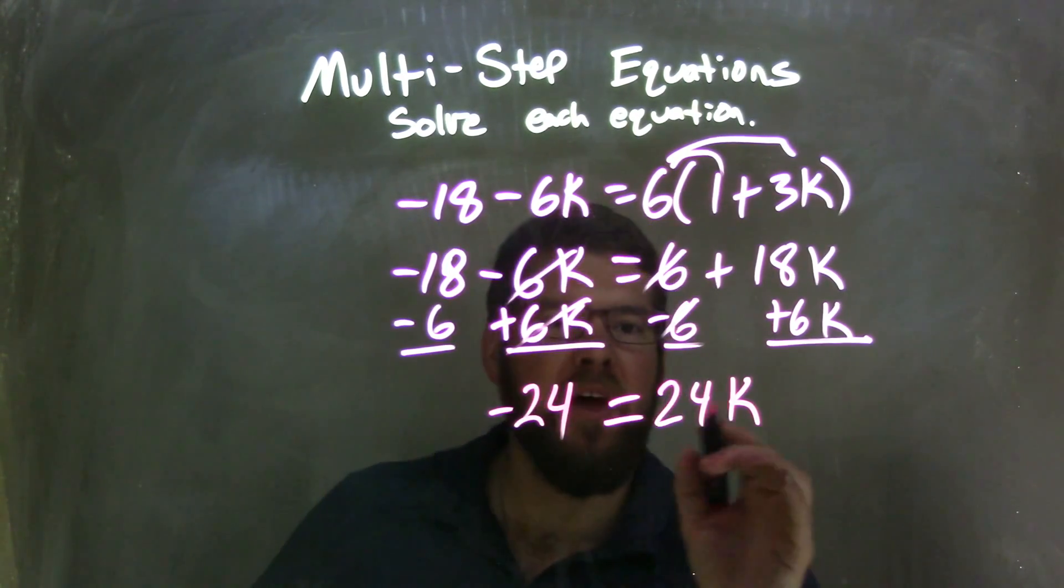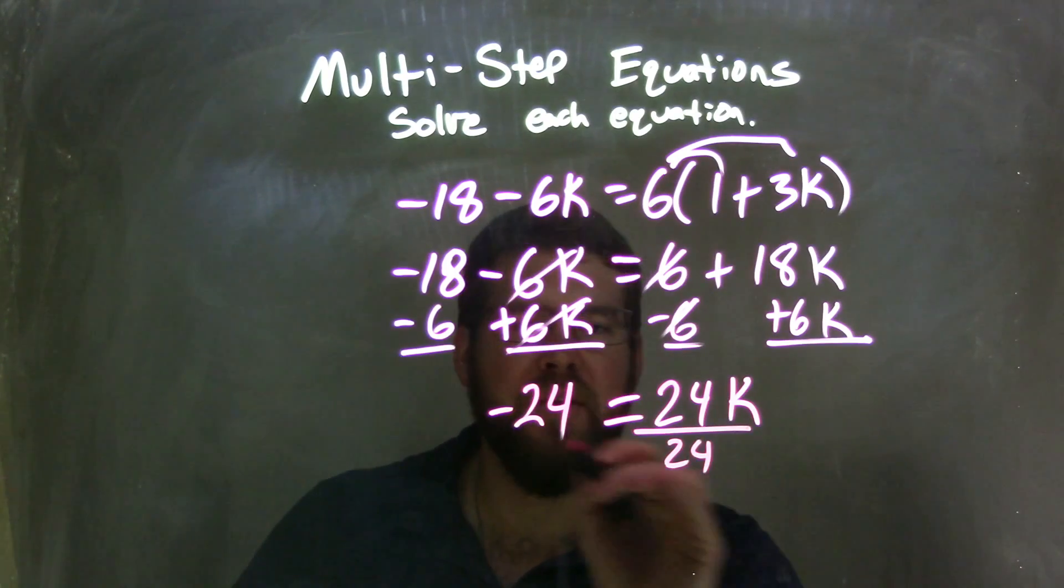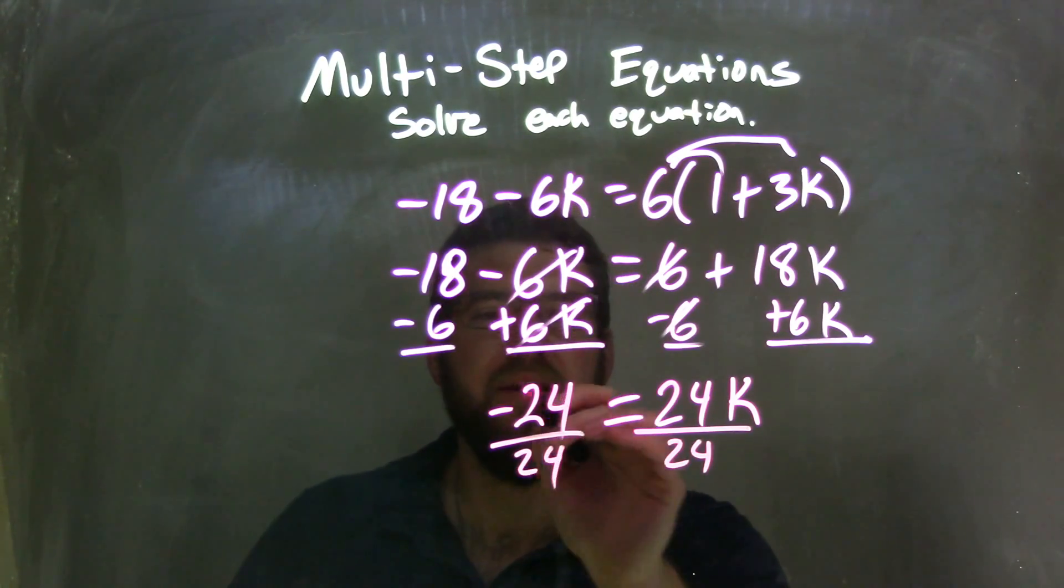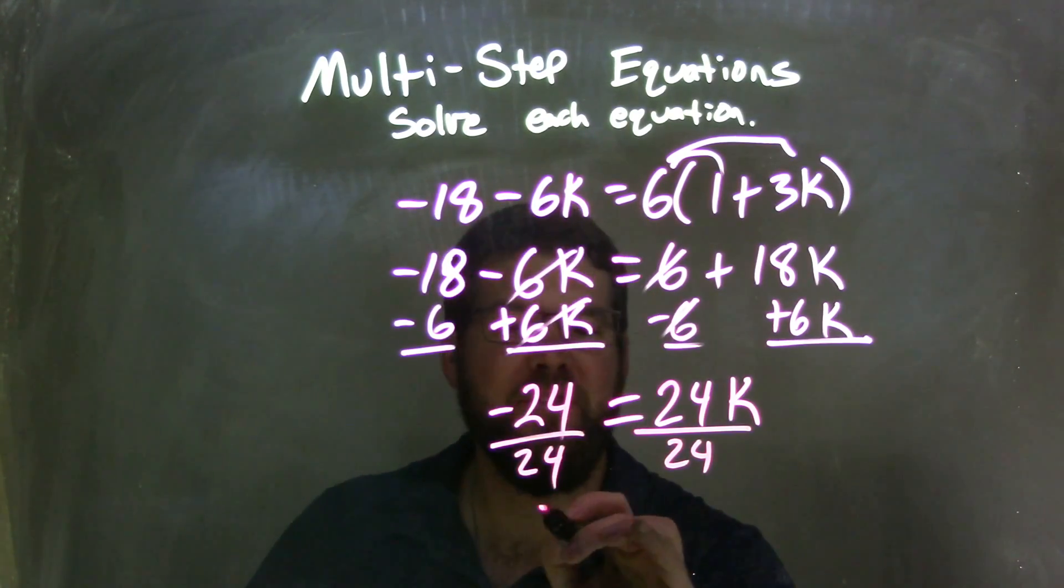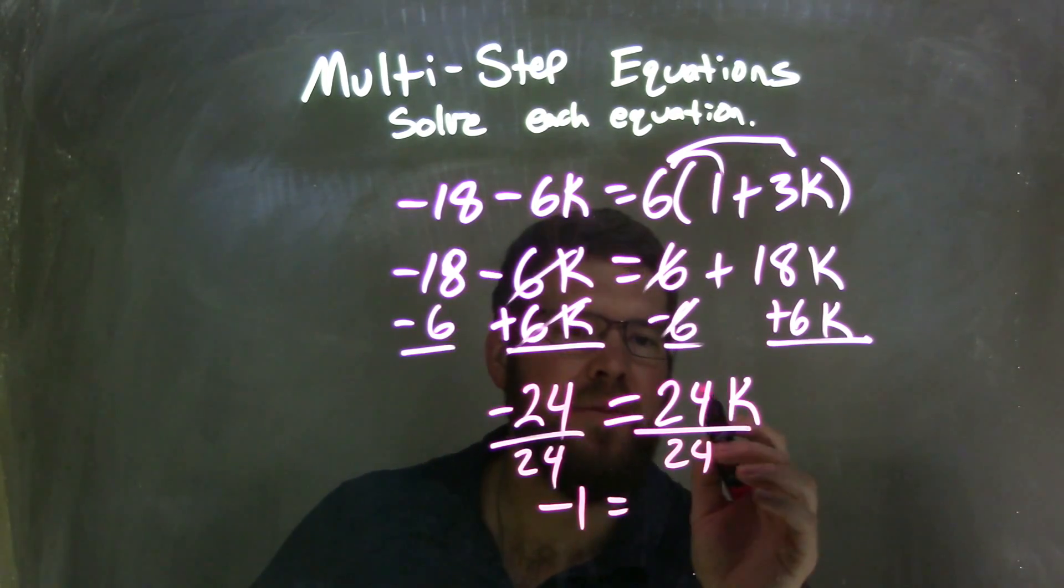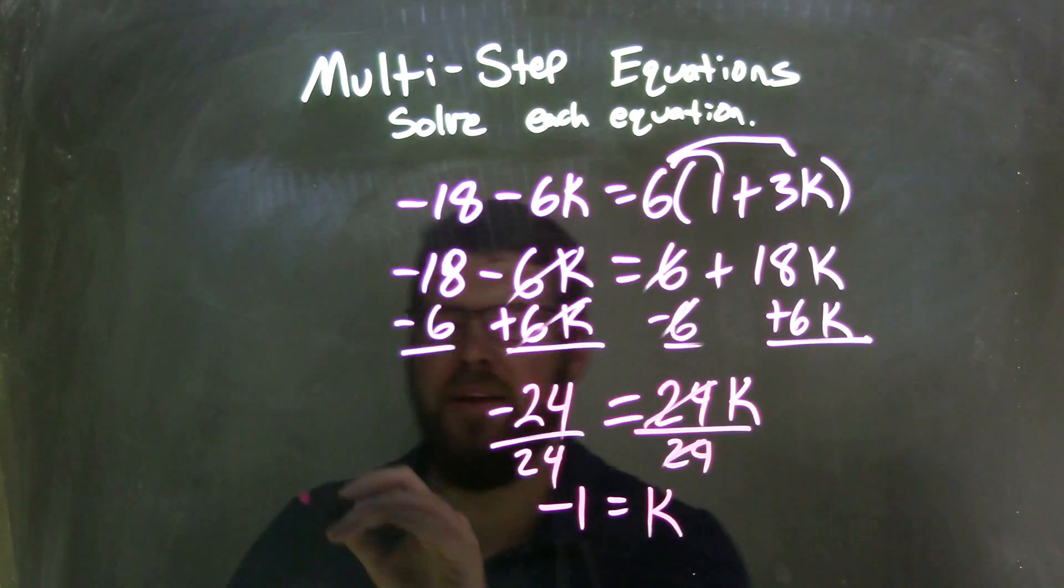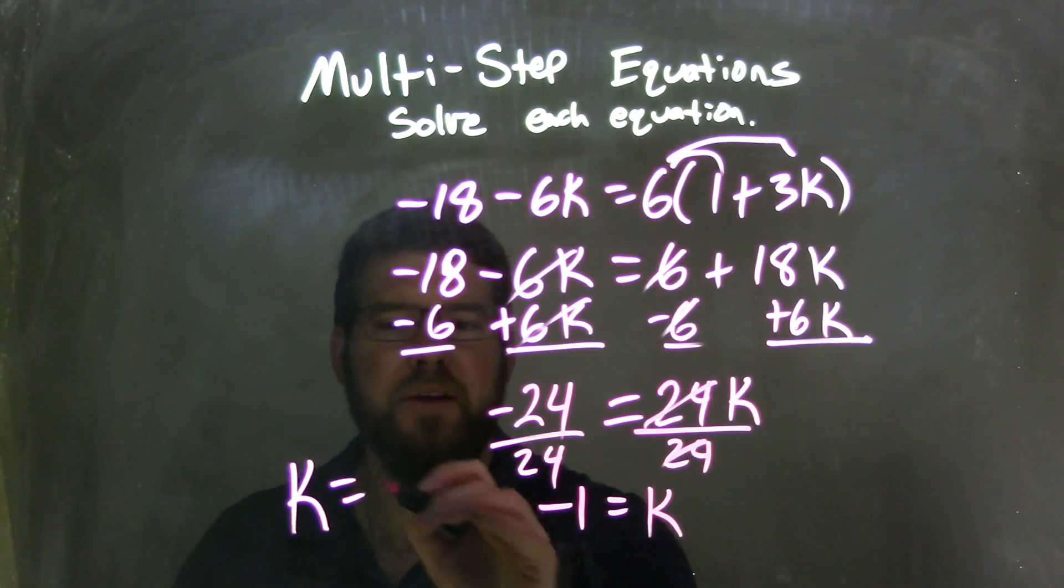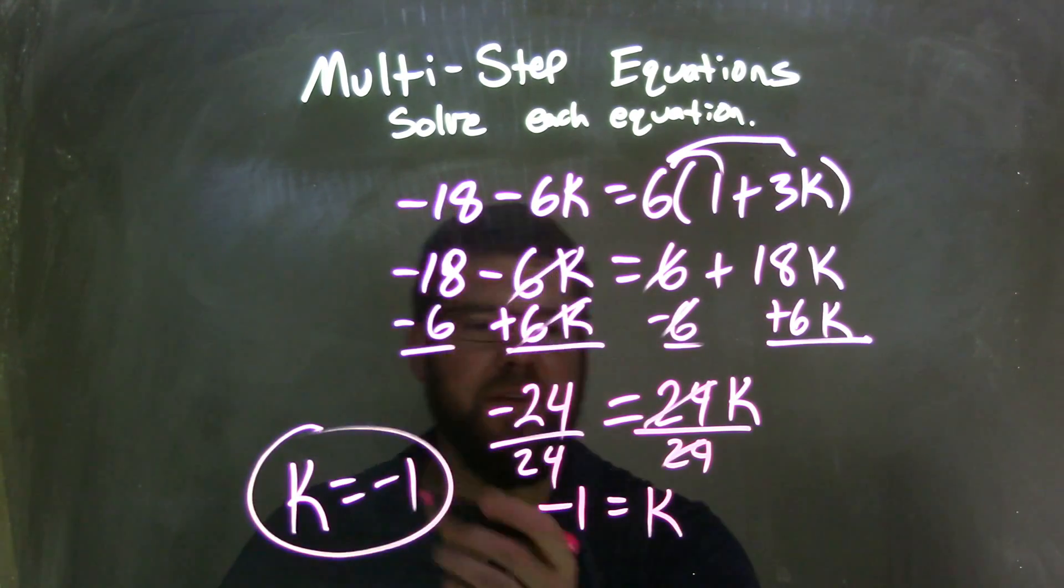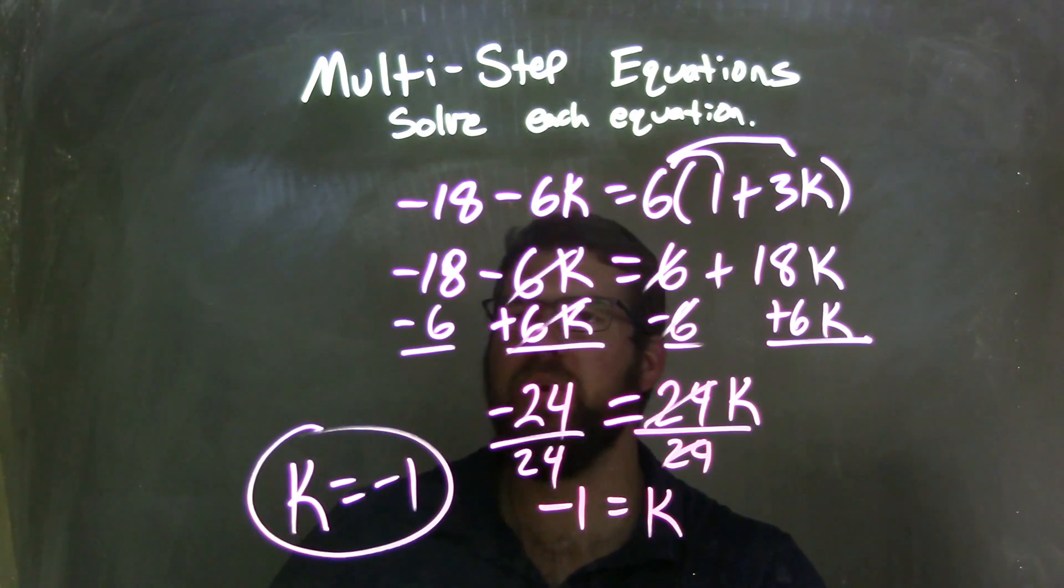Pretty simple now. We just divide both sides by 24. Negative 24 divided by positive 24 is negative 1, which equals k. To rewrite it nice and neat: k equals negative 1.